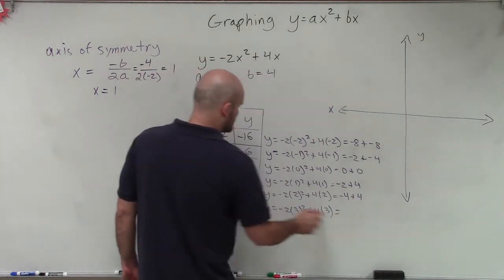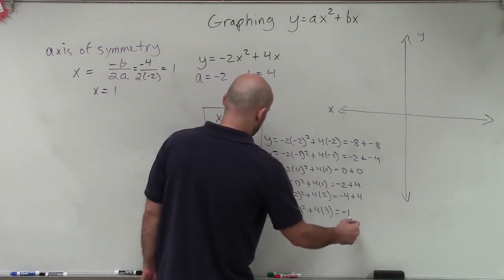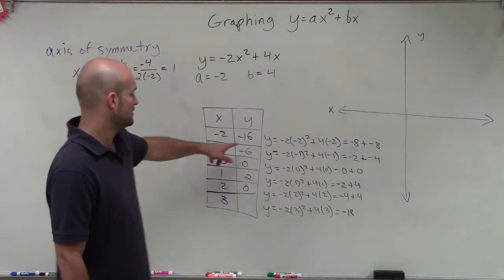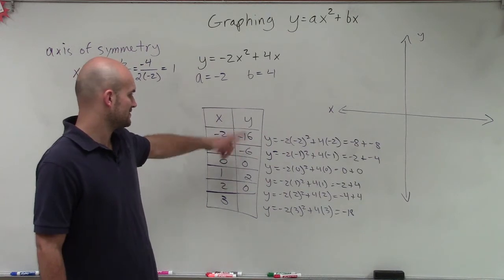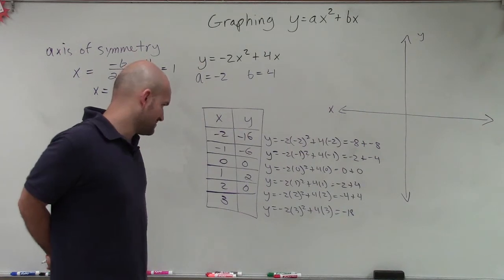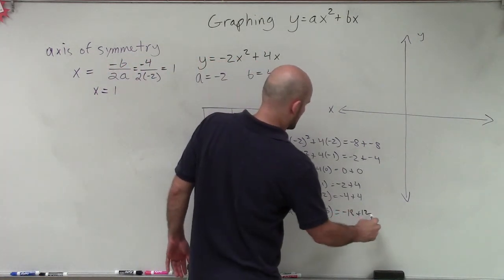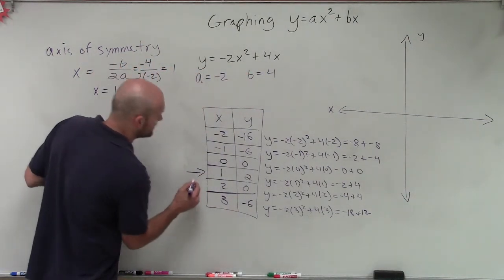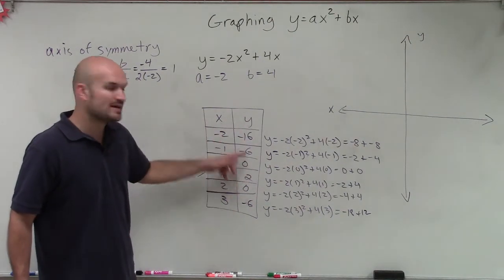Three squared is 9 times negative 2 is negative 18, plus 4 times 3 which is 12, giving negative 6. Our axis of symmetry was at 1, so the points to the left and to the right should be exactly the same — and they are. You can see the symmetry in the values.